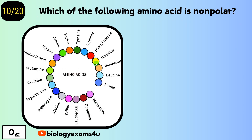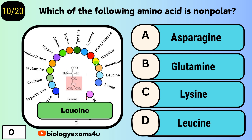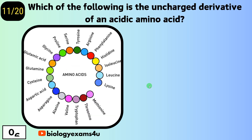Question number ten: which of the following amino acids is non-polar? Option A, asparagine; option B, glutamine; option C, lysine; option D, leucine. The answer is leucine, which is a non-polar amino acid.